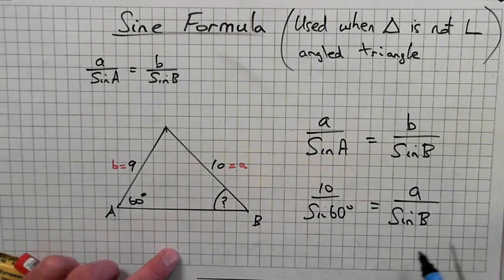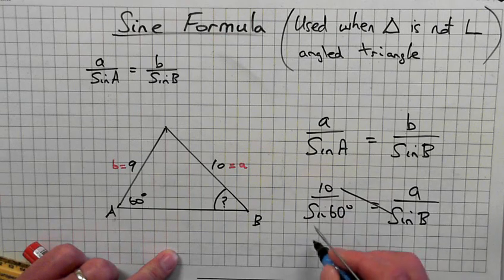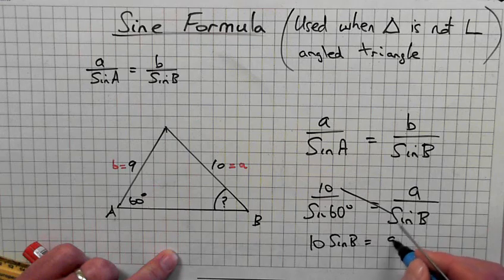So now we cross multiply. We'll cross multiply like this, so 10 sine B is equal to 9 times sine of 60 degrees.